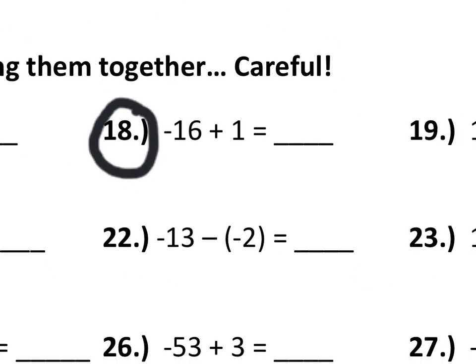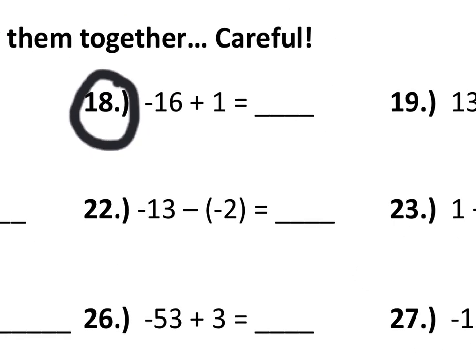Alright. Now, when we have a negative number and we add a positive number to it, one way to think about what's happening is we start with a negative number, and by adding a certain number, we're becoming less negative.